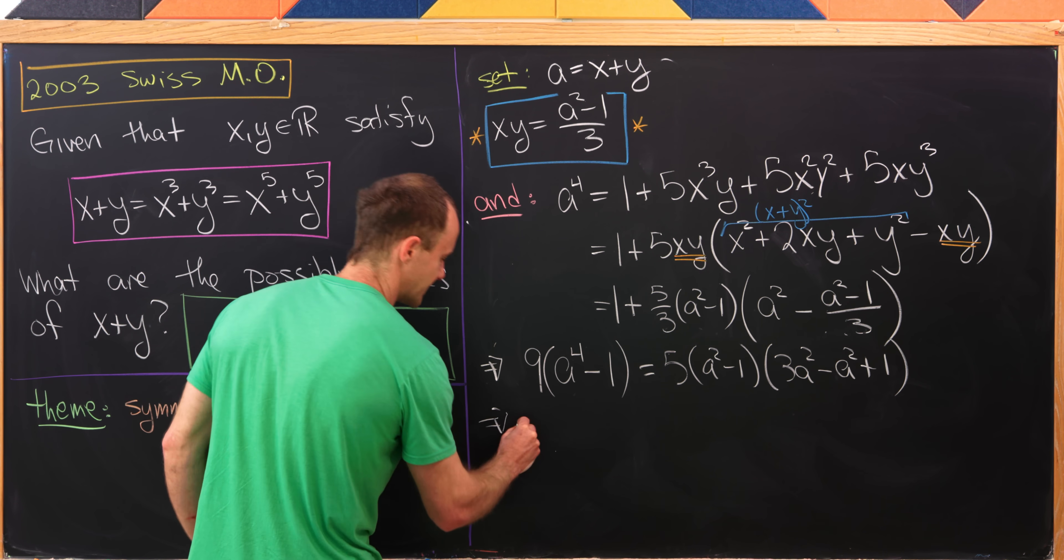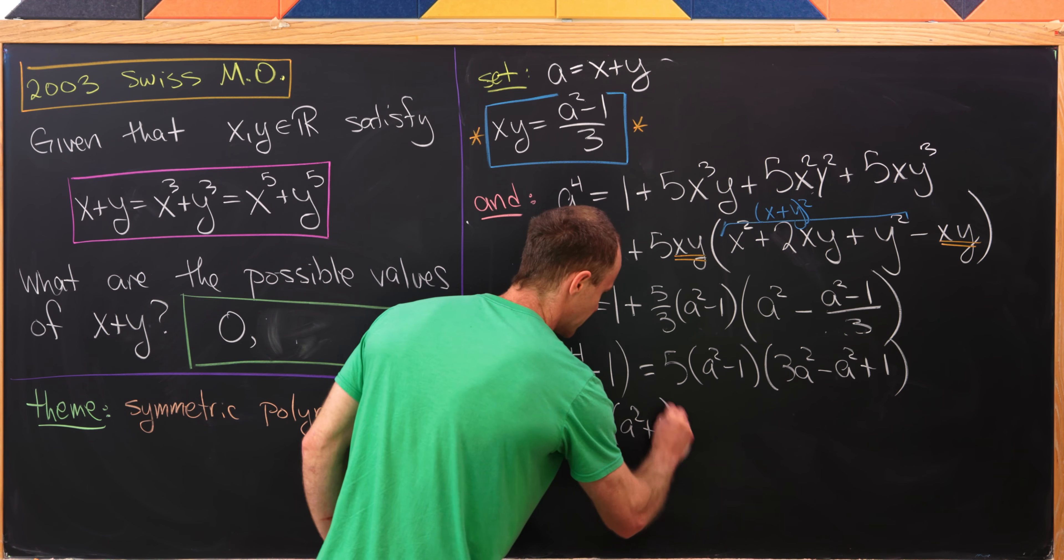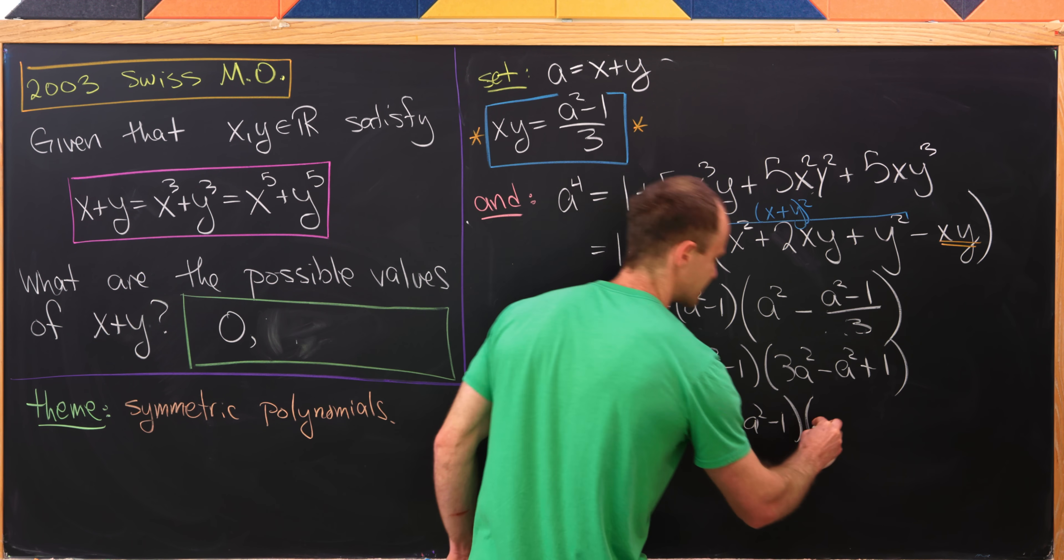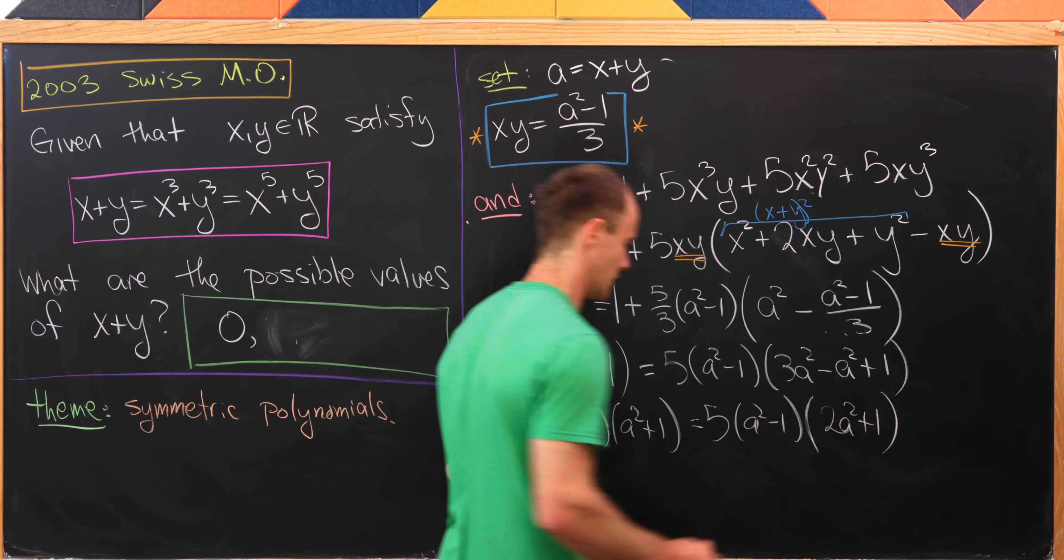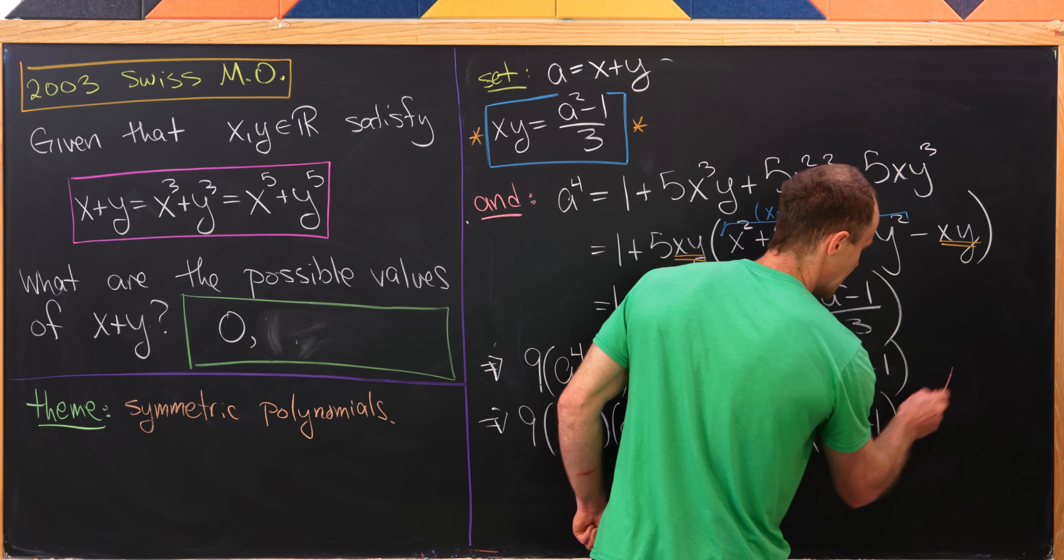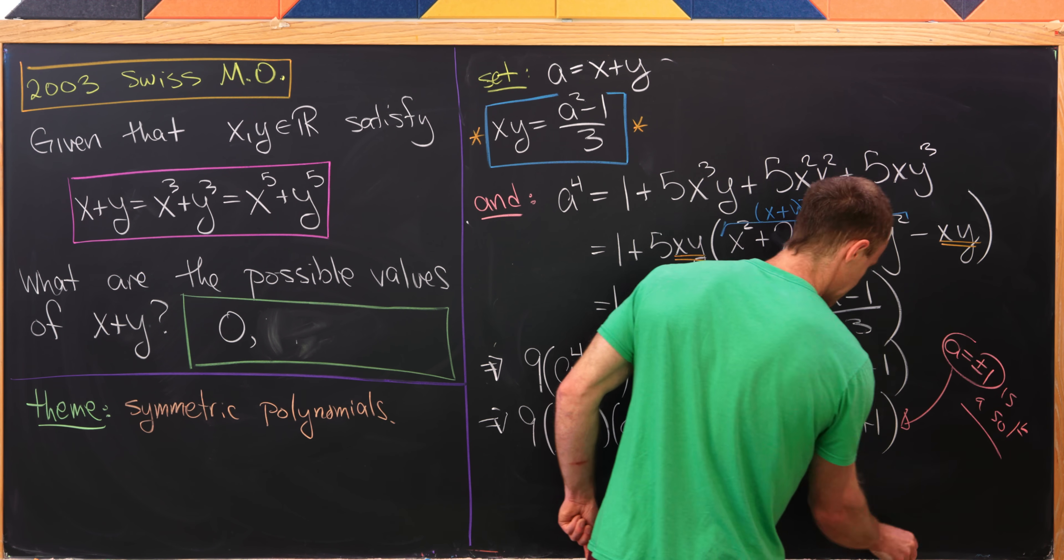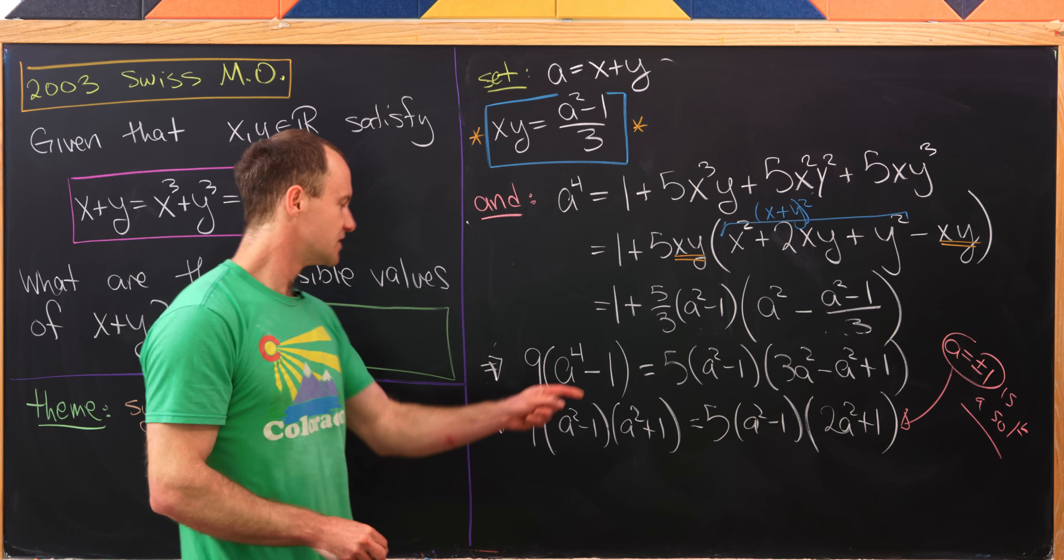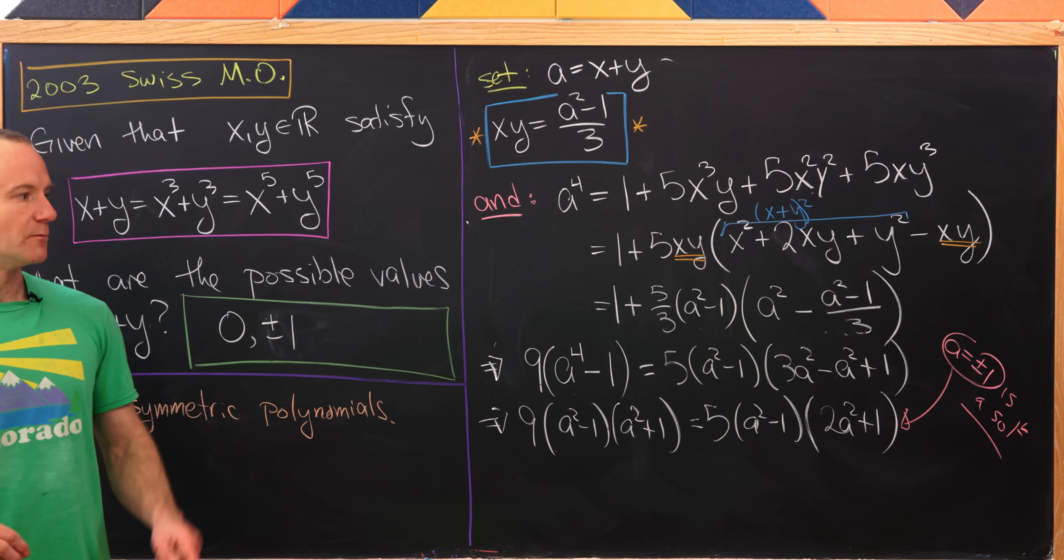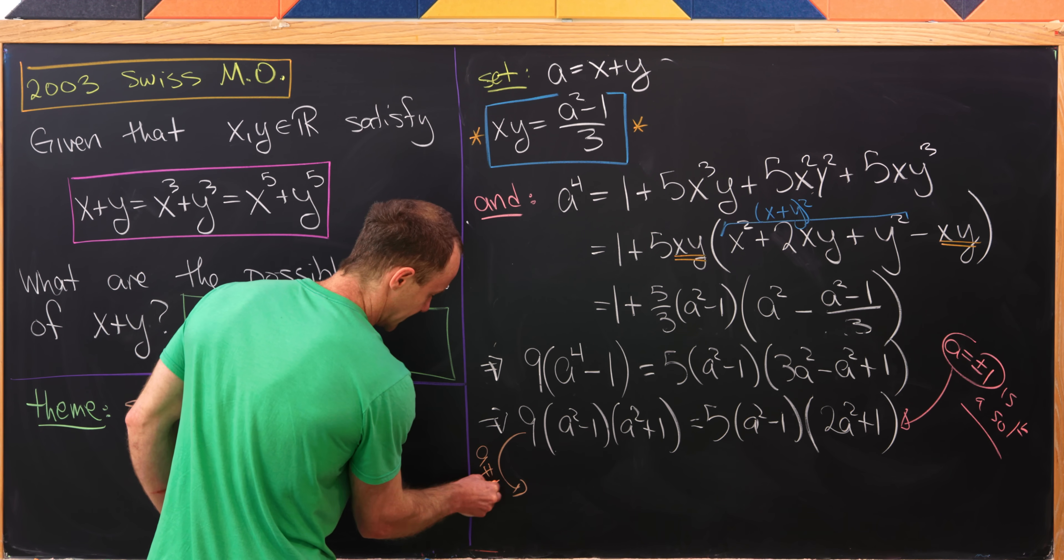Next up, I'd like to factor this left-hand side, leaving me with 9 times a squared minus 1 times a squared plus 1 equals 5a squared minus 1. And what is that going to be? It's going to be 3 minus 1, so that's 2a squared plus 1. And now we'll just acknowledge really quickly that a equals plus minus 1 is a solution, and that's because that'll zero out both sides of the equation. So let's add that to our list of possible solutions: plus minus 1.